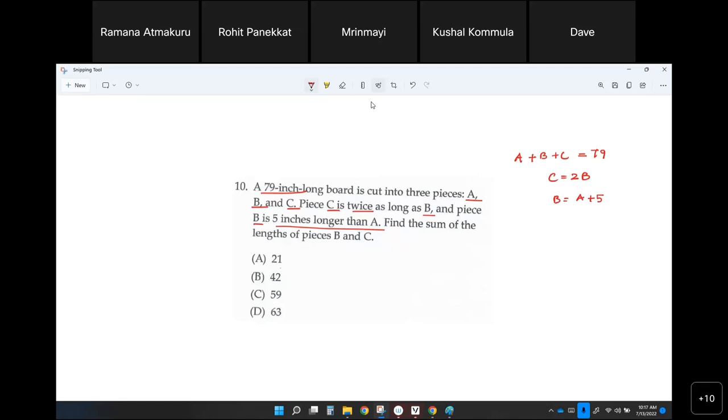So now that we have three equations and three variables, we are good. Find the sum of the lengths of pieces B and C. Everybody got that? This is B and C. This is what we need.